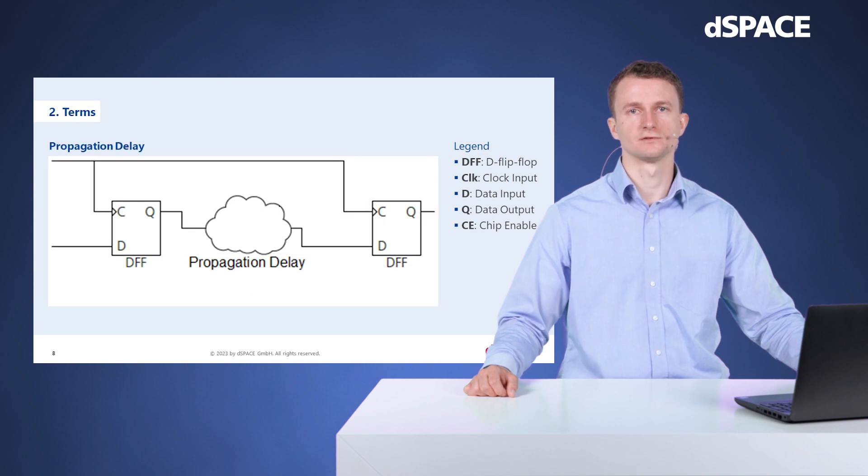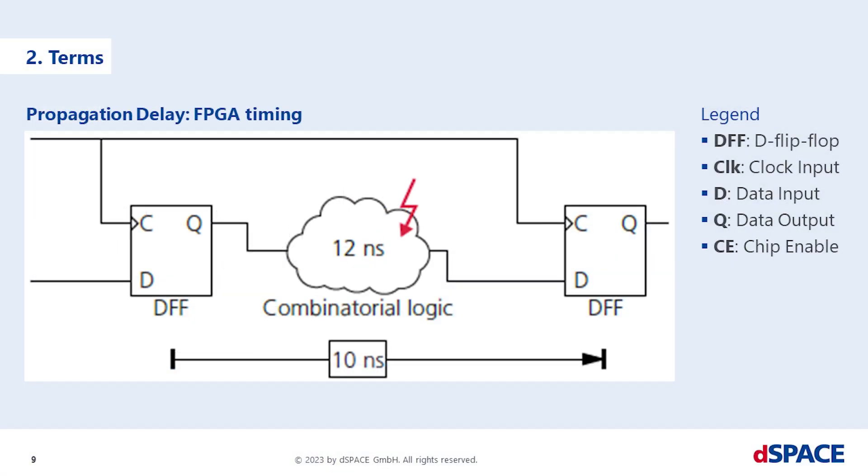The propagation delay is the time a signal requires from one flip-flop to the next. The propagation delay depends on the amount of logical elements and the routing of the signals. In FPGA logic, timing is always measured between two flip-flops and called FPGA timing. If the signal does not make its way through the combinatorial logic, which means all operations with latency zero, in the clock period, a timing error occurs.